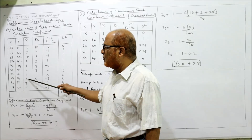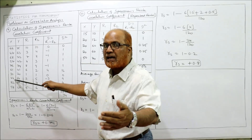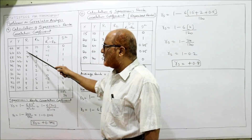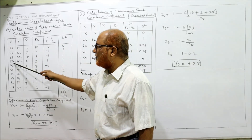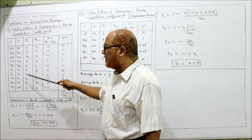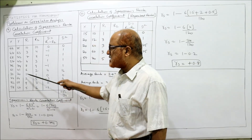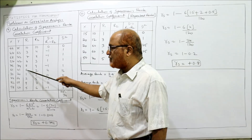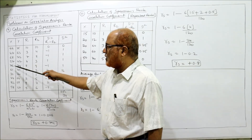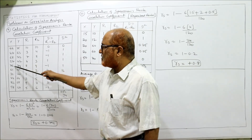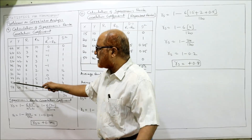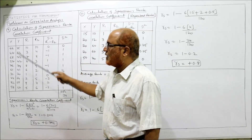After 30, the next higher value is 44, so 44 gets second rank. After 44, the next higher is 47, then 55, and so on up to 82 which gets ninth rank, and 99 gets tenth rank. The smallest value is assigned first rank, gradually giving successive ranks.